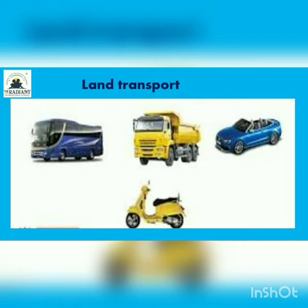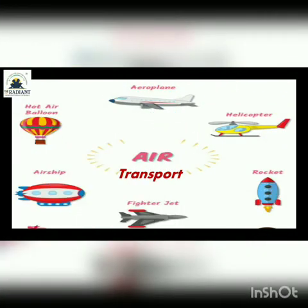Now look at this picture. These are means of air transport — jo hawa mein urte hain, they fly in the air: aeroplane, helicopter, rocket, fighter jet, airship, hot air balloon. These are different means of air transport.